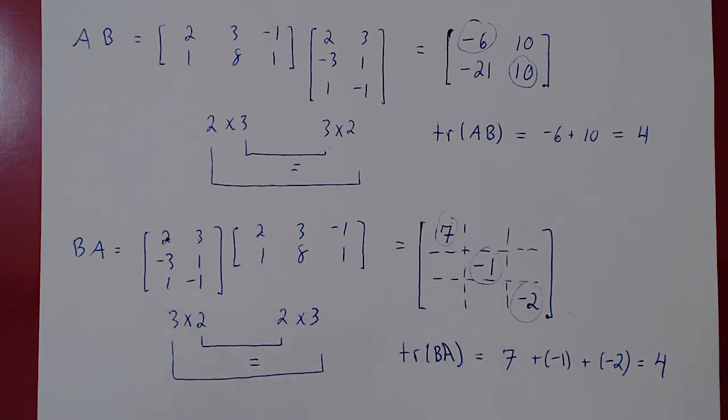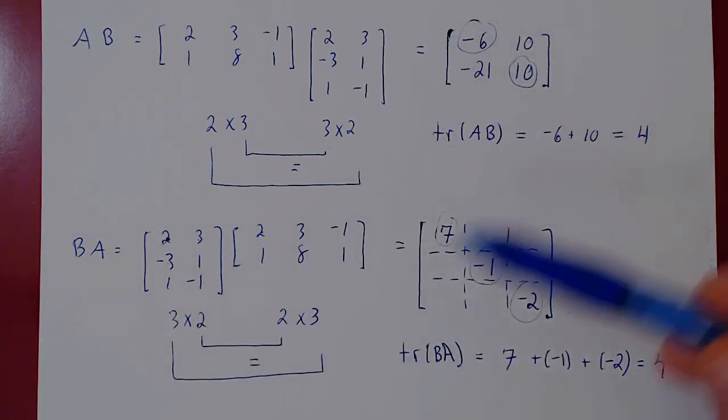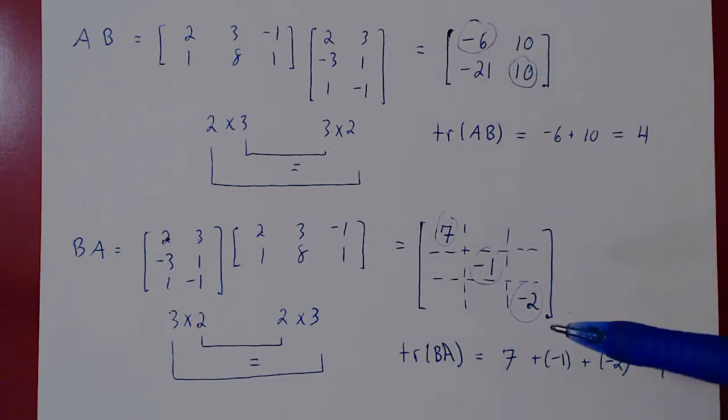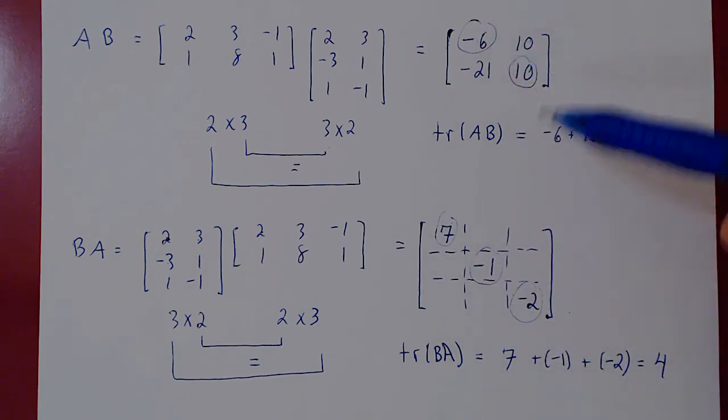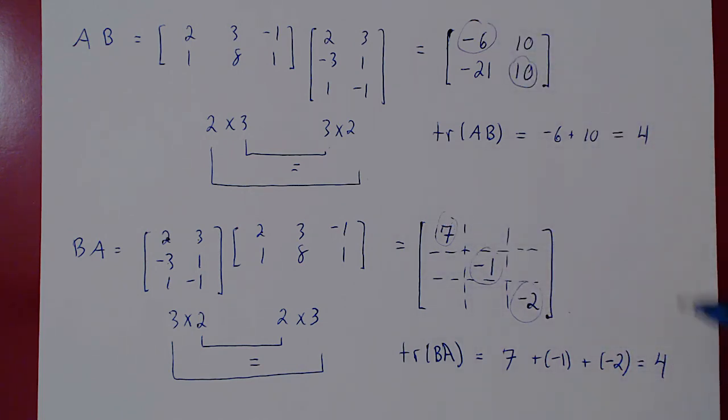And if you think about this, this is quite astonishing. Whereas AB is a 2 by 2 matrix, BA is a 3 by 3 matrix, the entries are very different, and yet, if you add the entries on the diagonal of both matrices, the answer is the same. And this is not an accident. The trace of AB, if AB and BA are defined, they both will be square matrices, and they will always have the same trace. Once again, that property I leave to you as an exercise. And this completes our discussion of the trace.